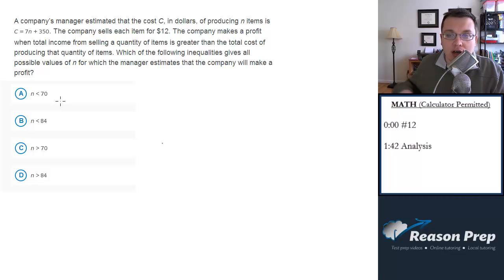We have the cost of producing n items that's given to us. It's c equals 7n plus 350. We're told, and we might know from real life, that you make a profit when your total costs are less than the revenue that you generate from selling those items, the income you get from making those sales.